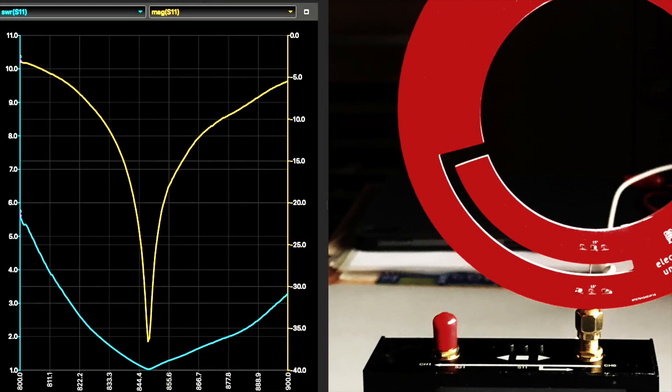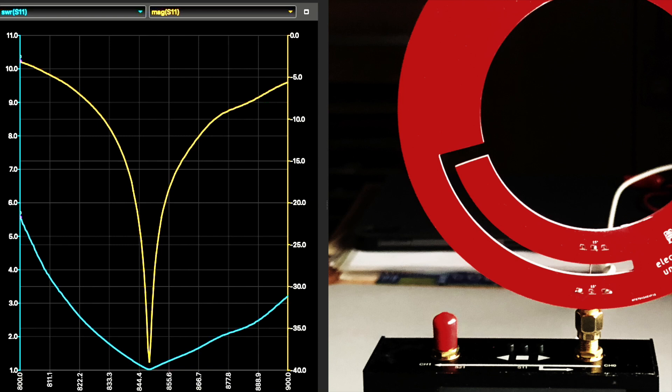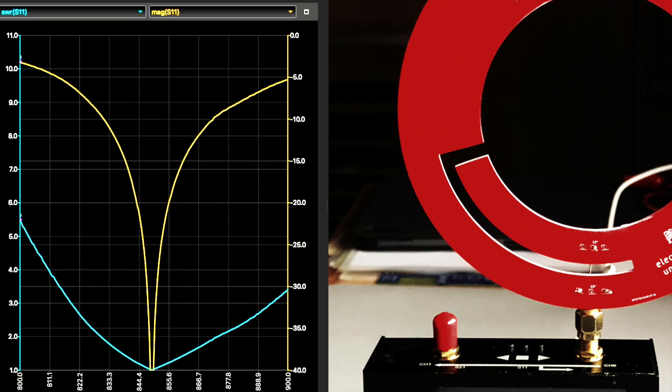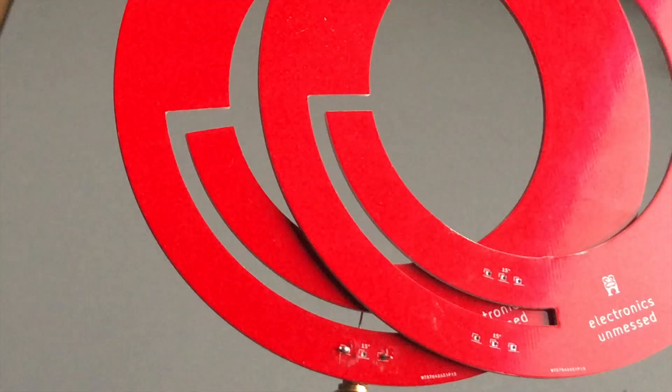The resonance frequency is 2.5% below 868 MHz, which is due to the influence of the substrate's effective permittivity, which we have not taken into account so far. But no problem. 2.5% can be tuned. We were showing the method in an earlier video.